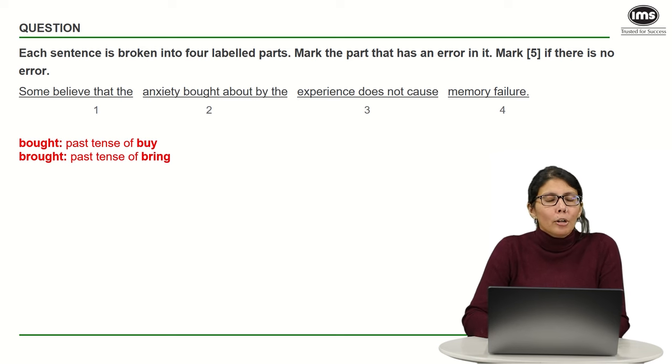Bought used in part number two is the past tense of buy. For example, I bought something from the store, but that's not what we really want to say. We want to say anxiety caused by the experience. Since we want to say that anxiety is caused, we should say anxiety brought about and not bought about. So sometimes it's just as simple as this. You need to pay attention and you will catch these errors fairly easily. The answer to this one is part number two.